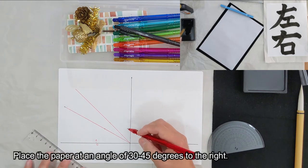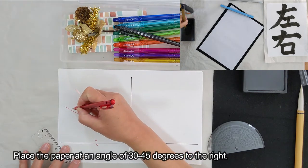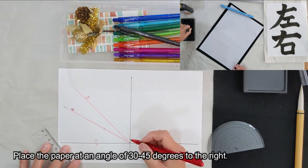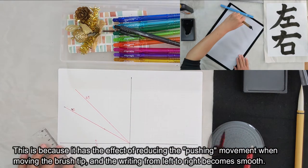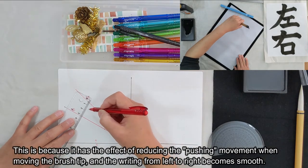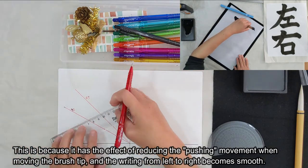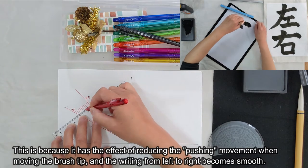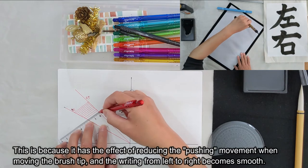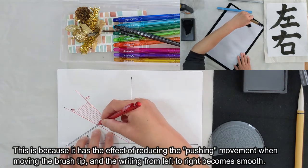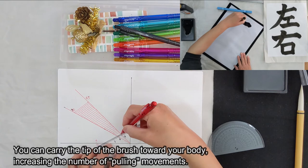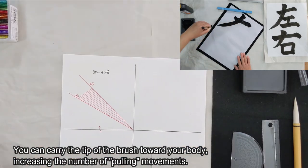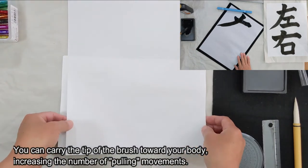Place the paper at an angle of 30 to 45 degrees to the right. This has the effect of reducing the pushing movement when moving the brush tip, and writing from left to right becomes smooth. You can carry the tip of the brush toward your body, increasing the number of pulling movements.